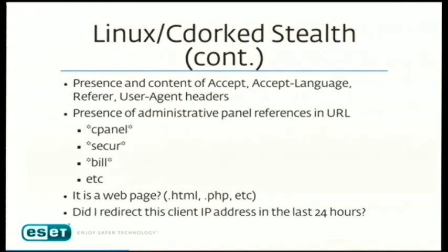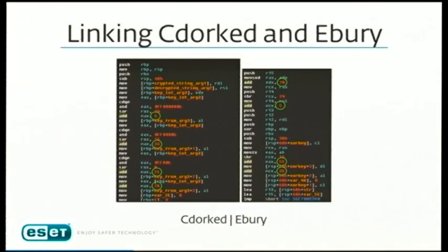On the timeline, we first encountered Cdork before Ebury. How did we link them? First, there was heavy IP correlation — most servers infected with Cdork were also infected with Ebury. Second, looking closely at the code, we noticed the XOR encryption constants are identical across both pieces of malware, just produced in different order by the compiler. These two indicators gave us strong confidence that both are operated by the same people.